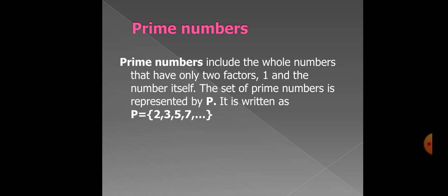Prime numbers includes the whole numbers that have only two factors, one and the numbers itself. The set of prime numbers is represented by P. It is written as P equal to 2, 3, 5, 7 and so on. Prime numbers are those numbers which have only two factors, one and the given number. As you have given the set of 2, if we have factors, they will be 1 and 2. 3 has factors 1 and 3. If we have 5, factors will be 1 and 5, 7 and so on.